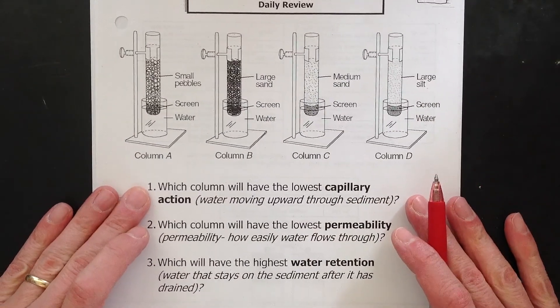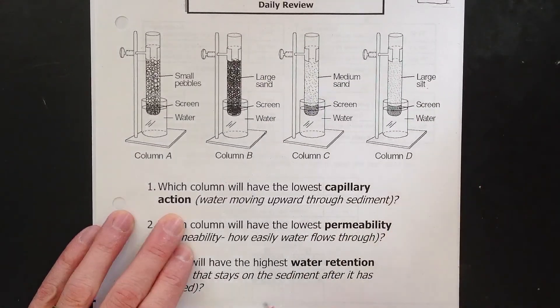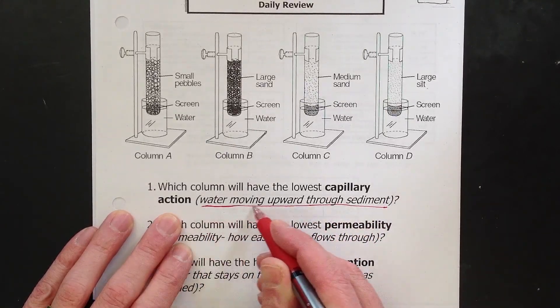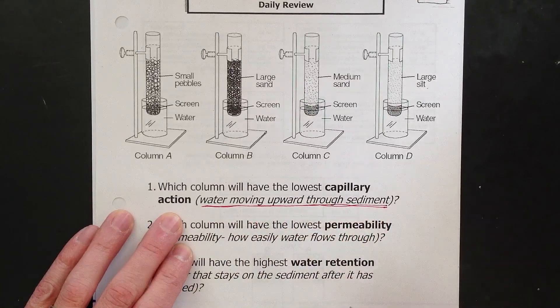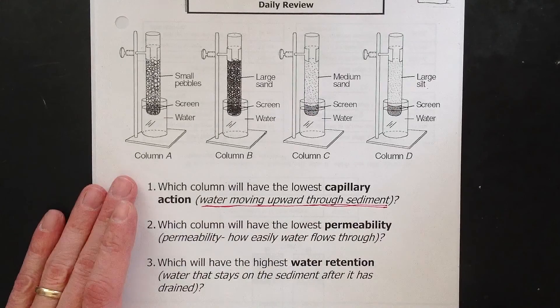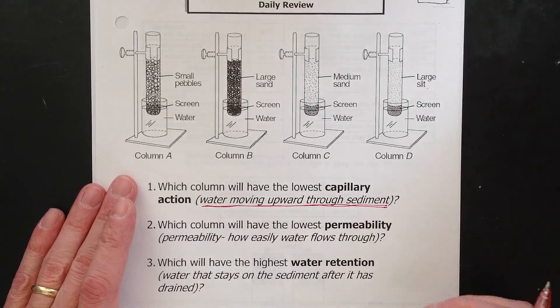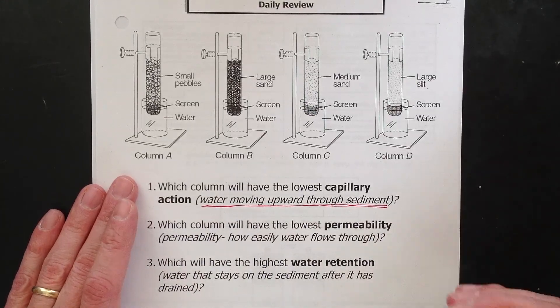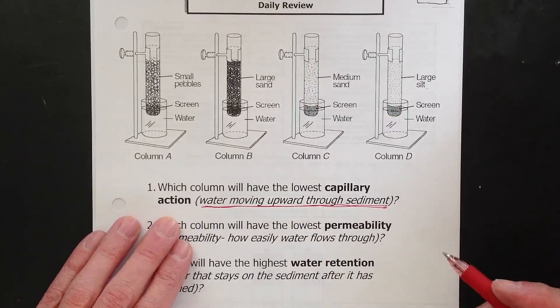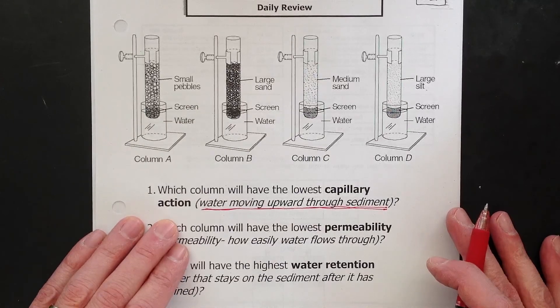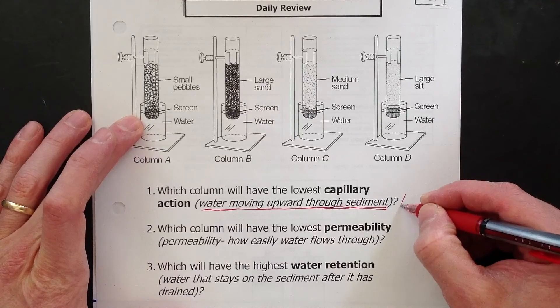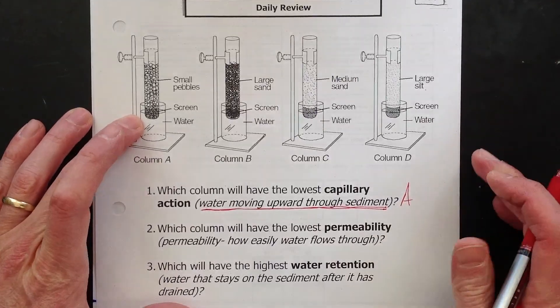Look at one right here. Which column will have the lowest capillary action? And look what I did. I wrote what capillary action is because this is something you need to know. Make sure this gets in your head. Capillary action is water moving upward through the sediment, similar to water moving upward in a paper towel. As it climbs upward, clinging to the sediment and within the space of the sediment. The lowest capillary action, water will travel up the least. You need to know that it will be the largest sediment, will have the least. Therefore, that should be choice A, column A. Alright?